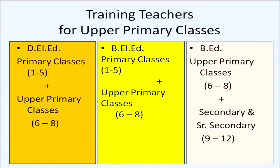Most training institutions offer the DL ed course for upper primary classes. The DL ed course covers primary classes 1 to 5 and is a 2-year program. During the first year they cover how to teach primary classes 1 to 5, and in the second year they cover how to teach upper primary classes 6 to 8. There is another program, BL ed, initiated by Delhi University and running in a few of its colleges. It is a 4-year program training teachers for both primary and upper primary classes. The older B.Ed course, which has been going on for years, trains teachers to teach classes 6 to 12, so the focus on upper primary classes is not as strong as in BL ed and DL ed.